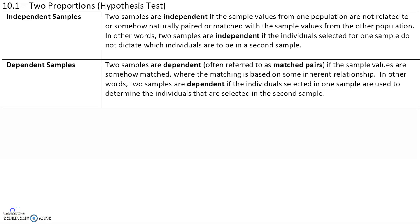In this section, we will talk about hypothesis tests for two proportions. Two samples are independent if the sample values from one population are not related to or naturally paired or matched with the sample values from the other population. In other words, two samples are independent if the individuals selected for one sample do not dictate which individuals are to be in a second sample.